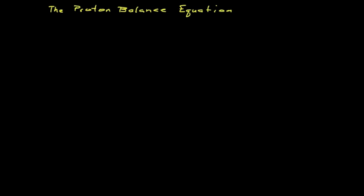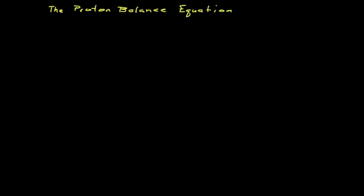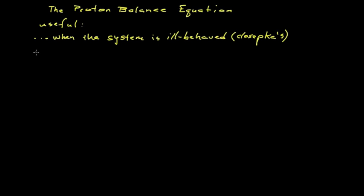Fortunately, there are ways of handling these problems, and one of these is known as the proton balance equation. This is useful when the system is ill-behaved or has close pKa values. It's also particularly useful when components from more than one weak acid-base family are present.